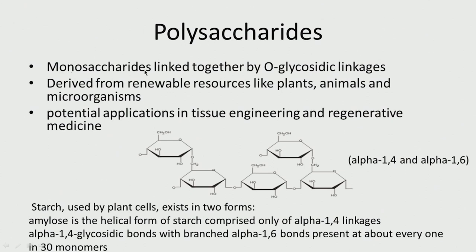Polysaccharides are formed by several monosaccharides linked together through glycosidic linkages. We have this oxygen connecting one monosaccharide to another — this is called an O-glycosidic linkage. We can have alpha linkage or beta linkage, and we can have alpha 1,4 or alpha 1,6 depending upon how two adjacent monosaccharides are connected. We can also have 1,3 and so on. These linkage types determine the structure and properties of the resulting polysaccharide.